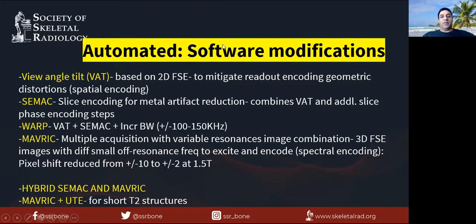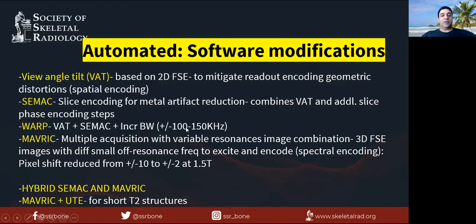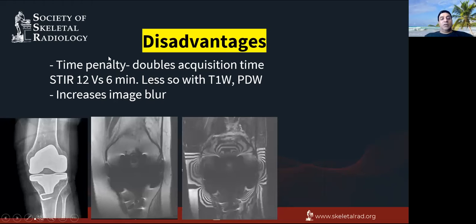There are automated software modifications beyond the manual techniques. View angle tilt mitigates geometric distortions. CMAC adds phase encoding steps, taking a little more time but reducing distortions. WARP combines view angle tilt and CMAC while also increasing bandwidth by another 100 to 150 kHz, leading to better imaging. The MAVRIC variant, which is a GE variant, uses 3D fast spin echo images with small off-resonance frequency pulses, reducing pixel shift from 10 kHz to about 2 kHz. These are typically done at 1.5 Tesla, and there are newer hybrid variants as well.